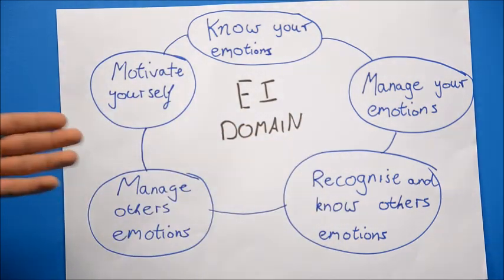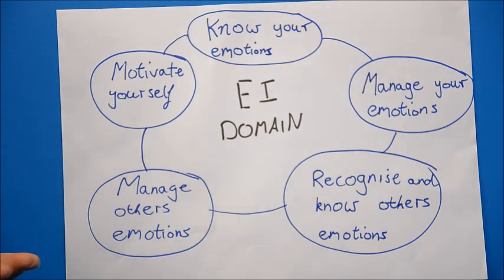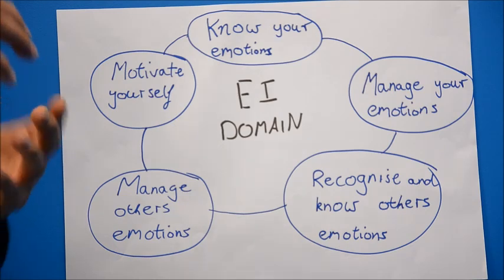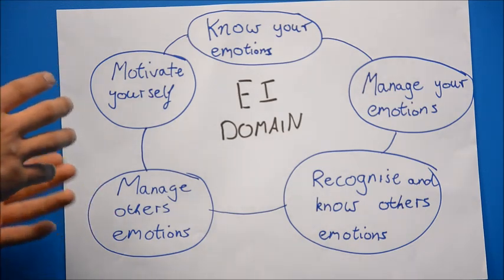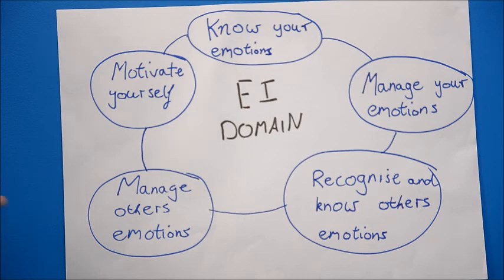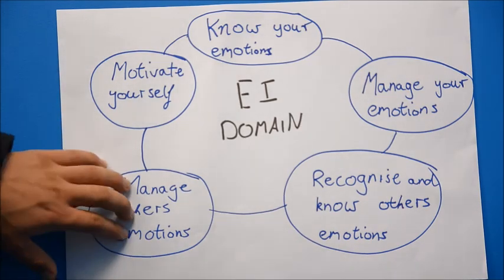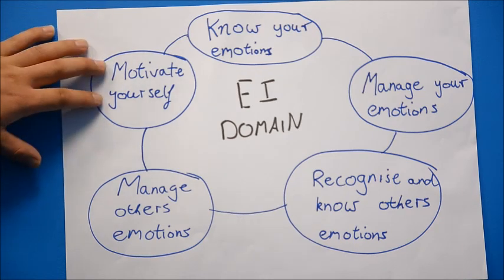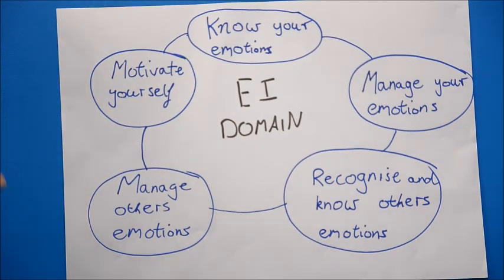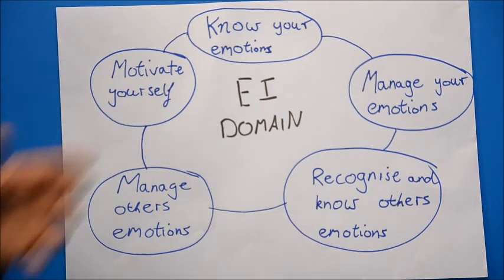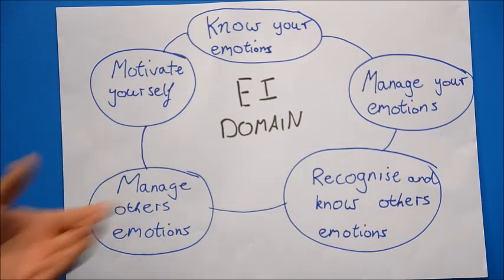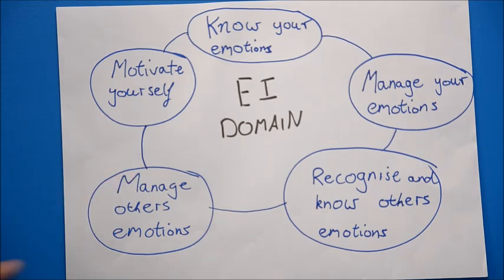So from there we go to the fourth one, which is managing others' emotions. So you not only have control on your own emotions, but you can also manage and control others' emotions. So you can change their thoughts, their emotions. From there it goes, motivate yourself. So that's very important. You have to know how to motivate yourself and keep on learning. That's basically what it means in the EI domain. It's a very interesting topic with a lot of in-depth. I'm still working on it. So hopefully I can come up with something better in the next few years.